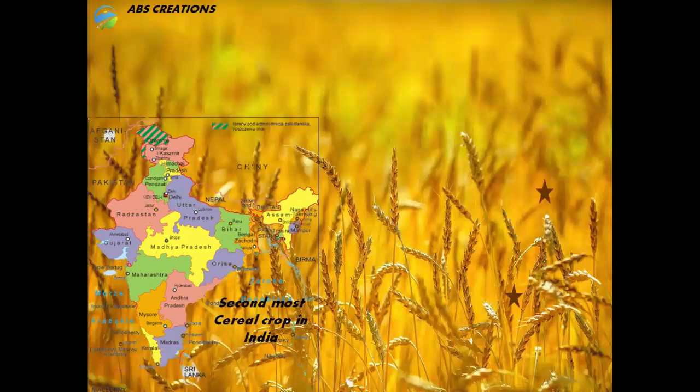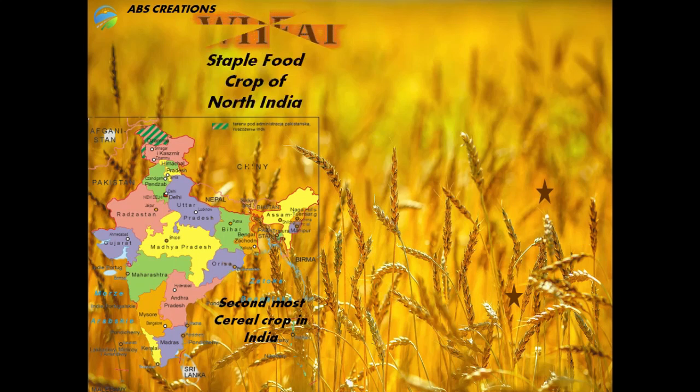The next major food crop is wheat. Wheat acts as the staple food crop of north India. It is one of the most important cereal crops after rice — the second most important cereal crop in India. India holds the third position in world production of wheat, after China and the USA.